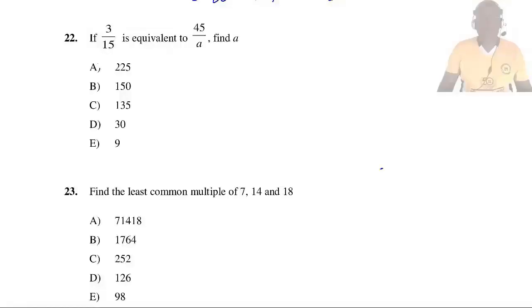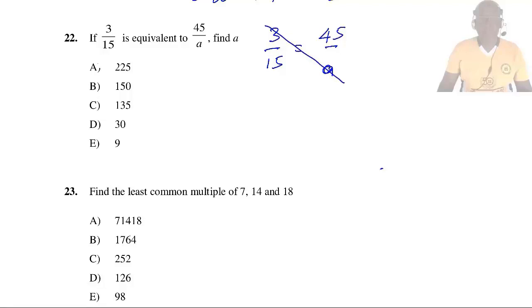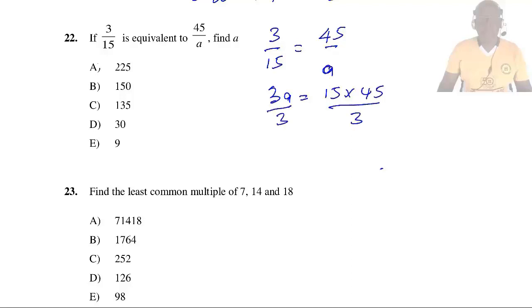Question 22: If 3/15 = 45/A, find A. Cross-multiplying: 3 × A = 15 × 45, so 3A = 675. Dividing by 3: A = 225. So the answer is A.